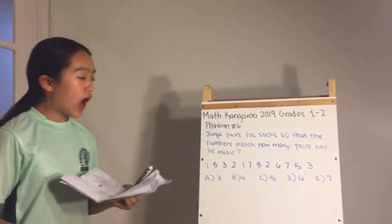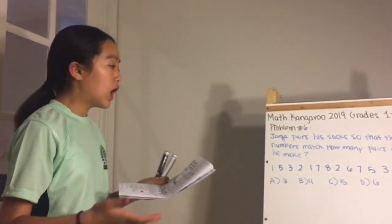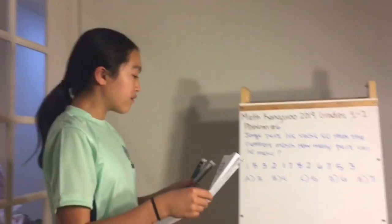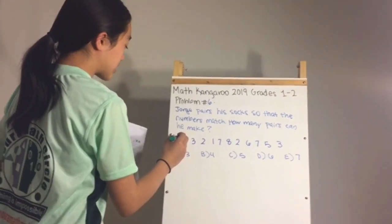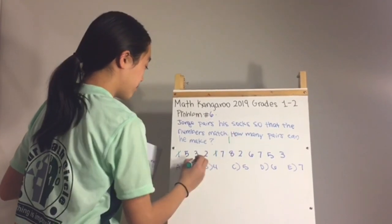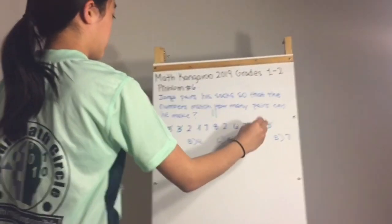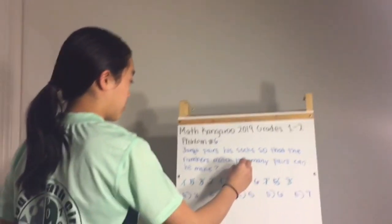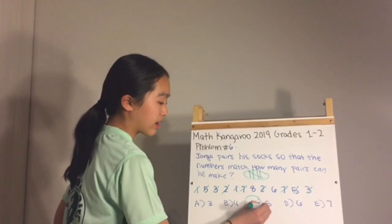Problem number six: Jorge pairs his socks so that the numbers match — how many pairs can he make? Write down all the numbers on the socks, then pair them up by crossing out matches and making tally marks. Pairs are found for several numbers, but eight and six have no pairs, giving a total of five pairs. The answer is 5.